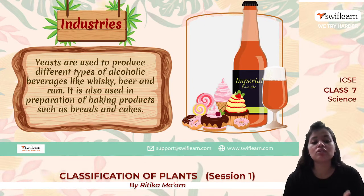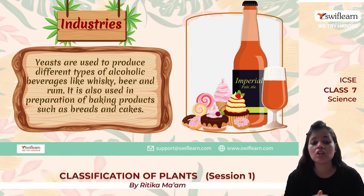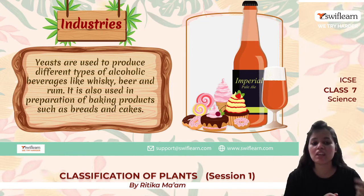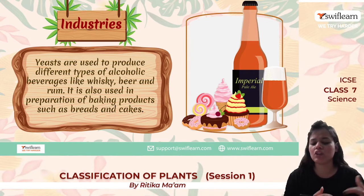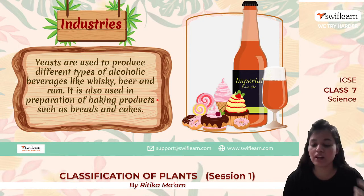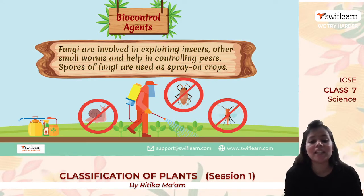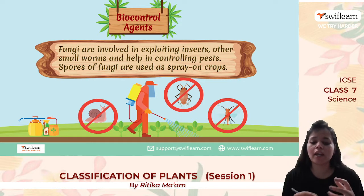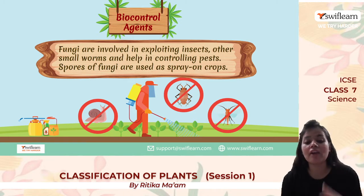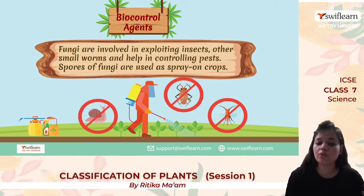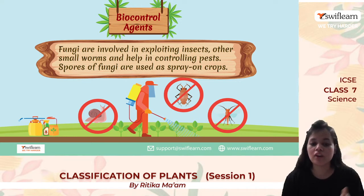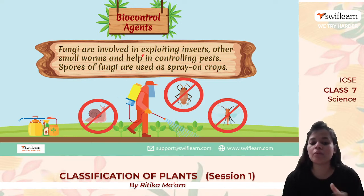In industries, yeast is very much used in wine industries. It helps produce different types of alcoholic beverages like whiskey, beer, rum, etc. It is also used in baking products such as cakes and breads. As a bio-control agent, fungi are involved in exploiting insects and small worms — they are used as pest control. The spores of fungi are used as prey on crops to protect them from various insects and worms.